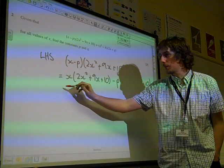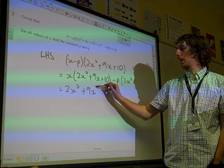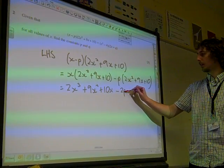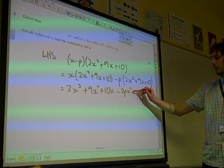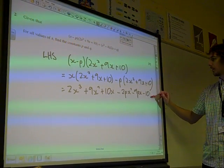And it's worth taking our time just to make sure we get this right. So we've got 2x cubed, it's 9x squared, it's 10x minus 2px squared. Now count for the signs here, minus 9px minus 10p.